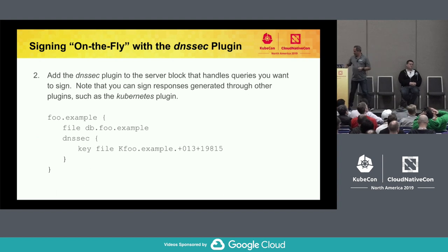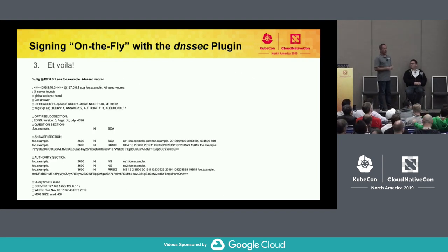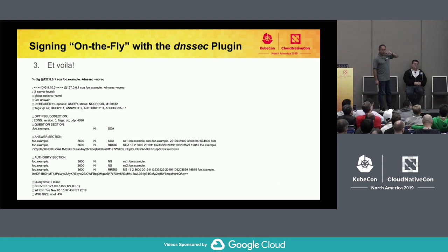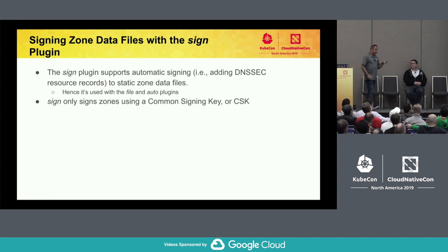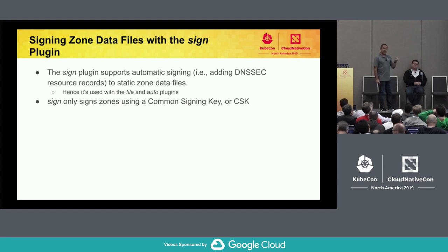You add the DNSSEC plug-in to your server block. Here's an example of a zone called foo.example — it already has its own data file called db.foo.example. We add the DNSSEC plug-in below that and refer to the base name using 'key file' plus the base name. When you send queries to your CoreDNS instance with the plus DNSSEC flag, you get additional data — in the answer section you get an RRSIG record covering the SOA record, and similarly in the authority section. This works even with the Kubernetes plug-in where you're synthesizing data from the Kubernetes API.